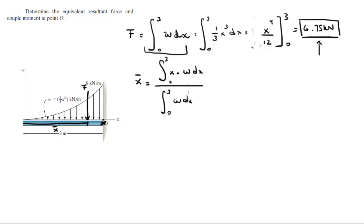So the top will become the integral from 0 to 3 of x to the 4 over 3 dx and the bottom we already found at 6.75.